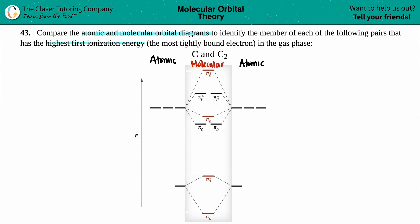Atomic just means that you're talking about the atoms. So in here, the atom is just going to be the carbon. We have carbon on this side and a carbon on this side. And then when they come together, they form the molecule, hence the word molecular. The molecule here would be C2.